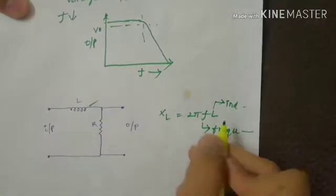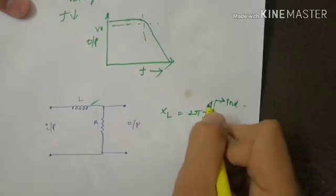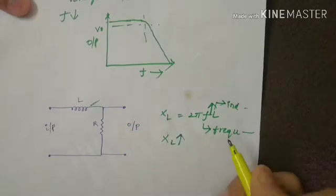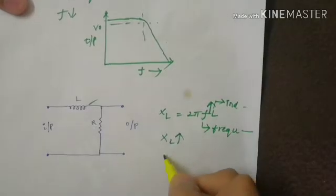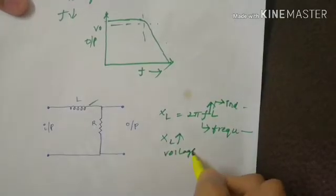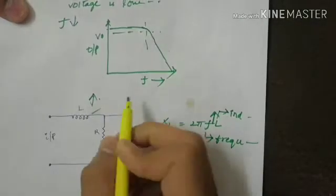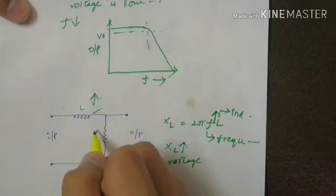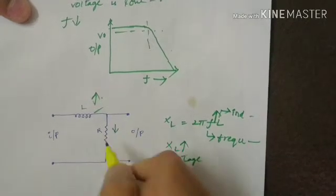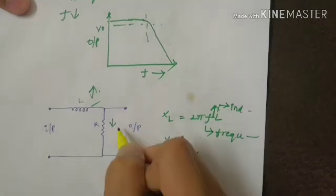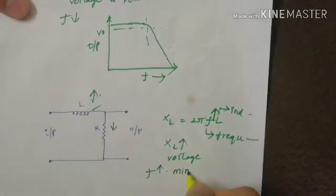When frequency is high, inductive reactance will also be high and voltage drop in this inductor will also be high so that voltage drop in this resistor is low. So when frequency is high we can find minimum output.